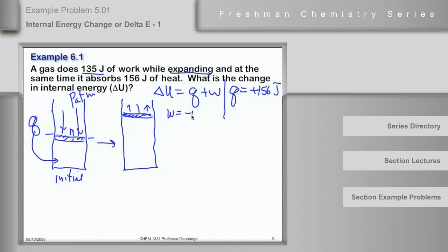Okay, work equals minus P delta V, but in this case, we don't have to do the calculation because it says already that we've done 135 joules of work. Now, is it clear that what we have here is negative 135 joules?